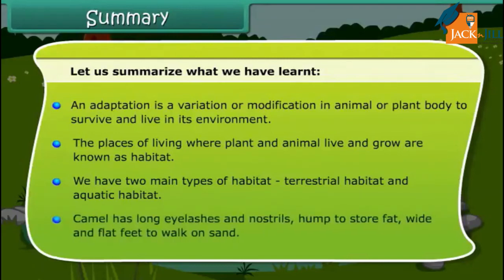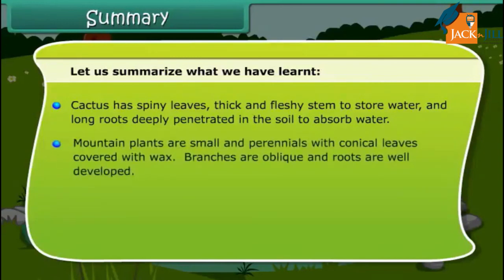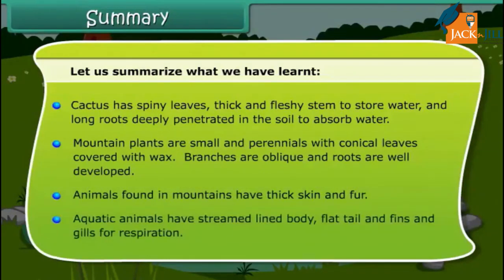Camel has long eyelashes and nostrils, a hump to store fat, and wide and flat feet to walk on sand. Cactus has spiny leaves, a thick and fleshy stem to store water, and long roots deeply penetrated in the soil to absorb water. Mountain plants are small and perennial with conical leaves covered with wax; branches are oblique and roots are well developed. Animals found in mountains have thick skin and fur. Aquatic animals have streamlined bodies, flat tail and fins, and gills for respiration.